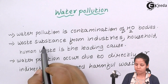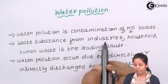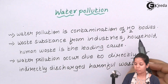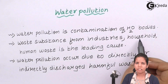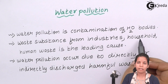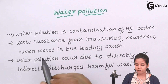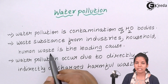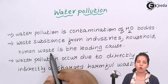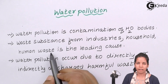Waste substances from industries, household waste generated due to cleaning, cooking, bathing, cattle waste, and even human waste are the leading causes of contamination of water bodies in India.